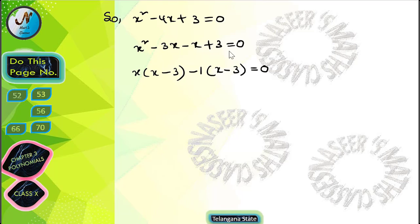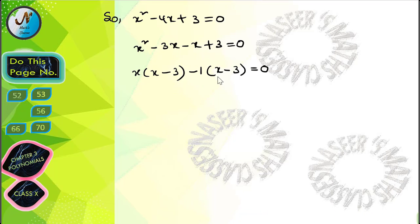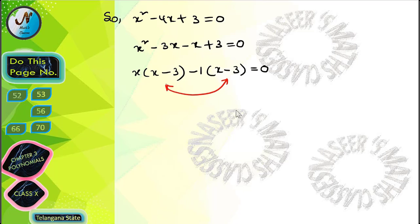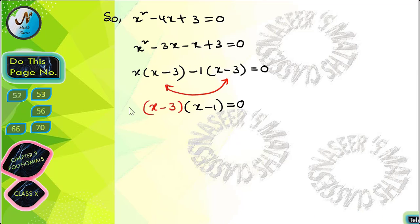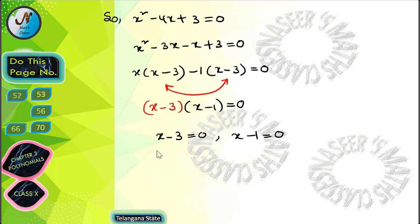From the third and fourth terms we take out -1 common, giving -1(x - 3). So the equation becomes x(x - 3) - 1(x - 3) = 0. Since (x - 3) is common, we take it out, giving (x - 3)(x - 1) = 0.